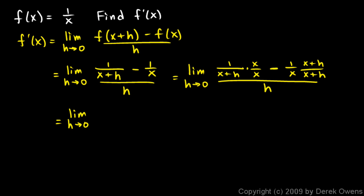And the numerator is going to be x minus this. So I'll write x minus x plus h. And that denominator here is x plus h times x. I'll write x plus h times x. And then all of that is over h.